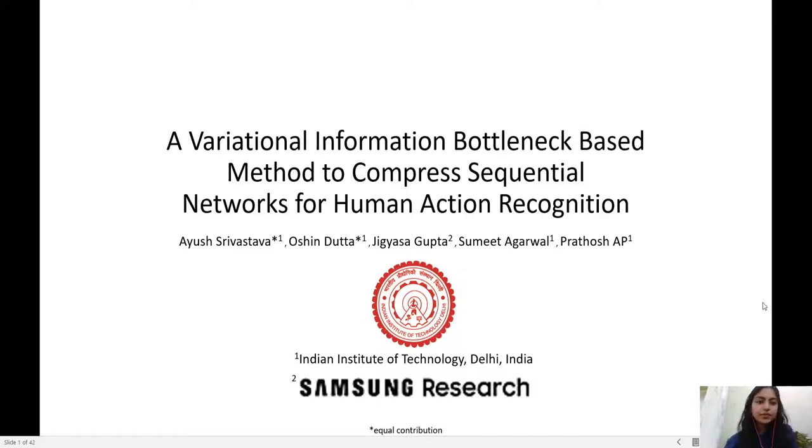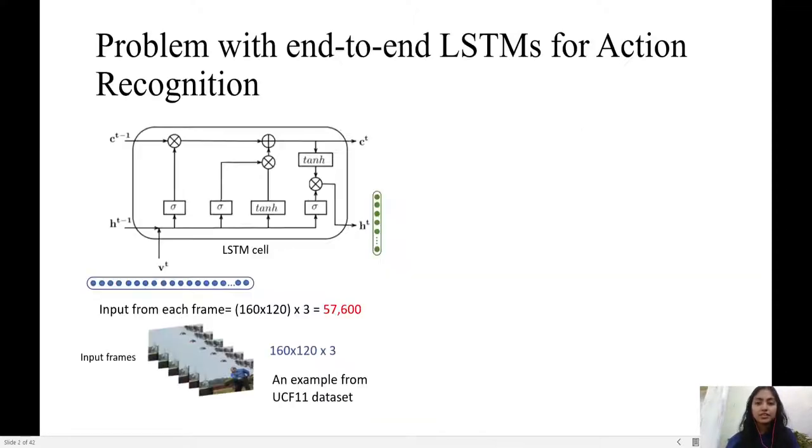Welcome to the presentation of the paper, a variational information bottleneck based method to compress sequential networks for human action recognition.